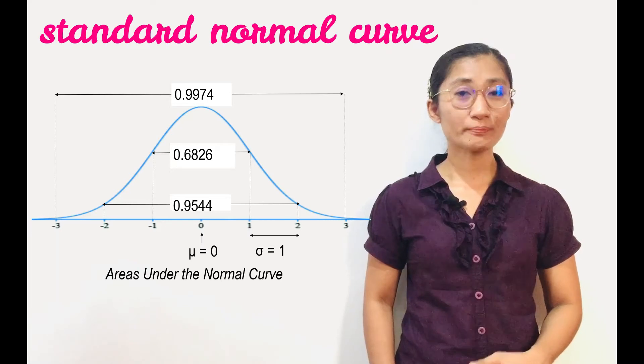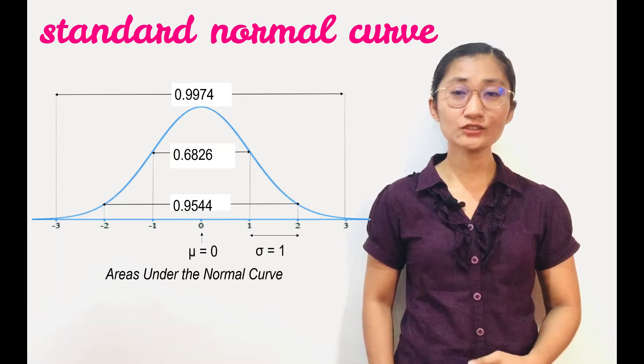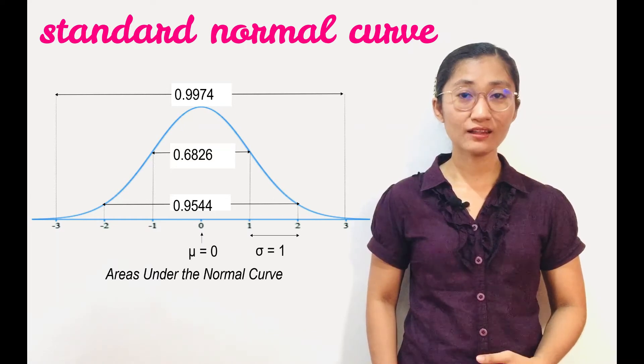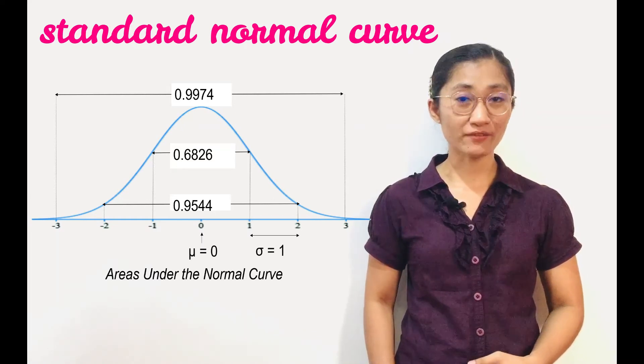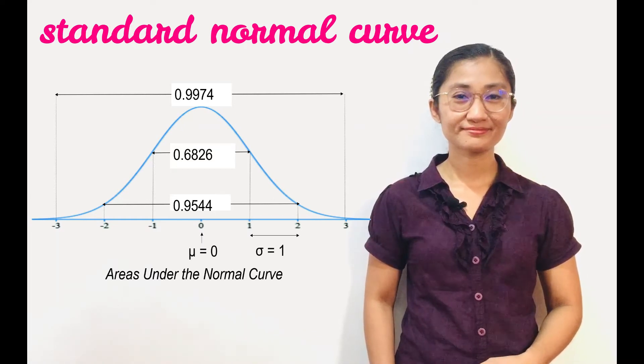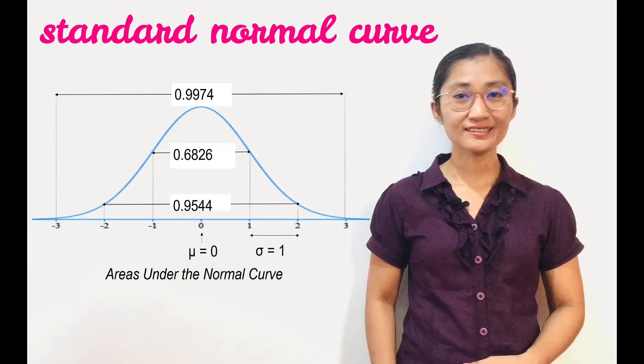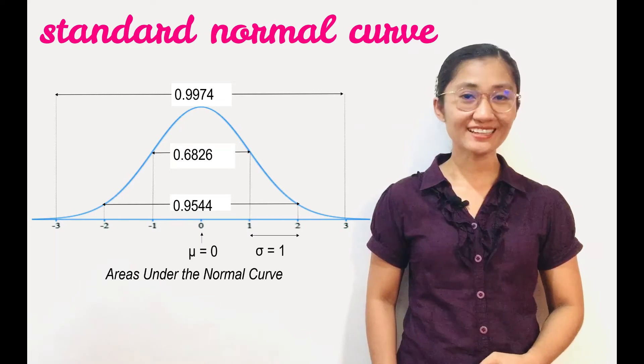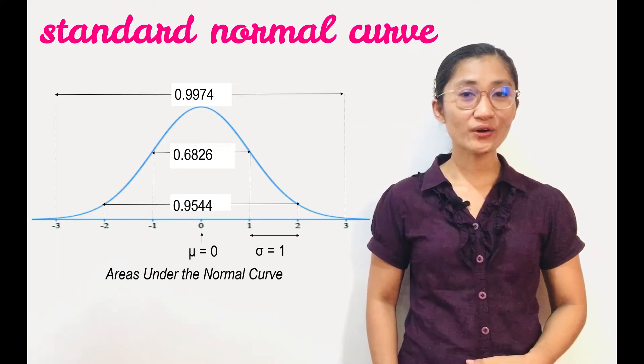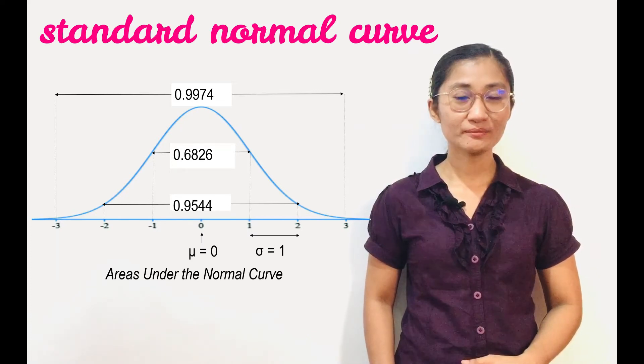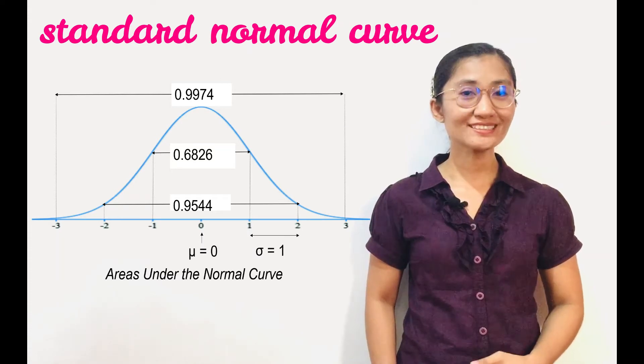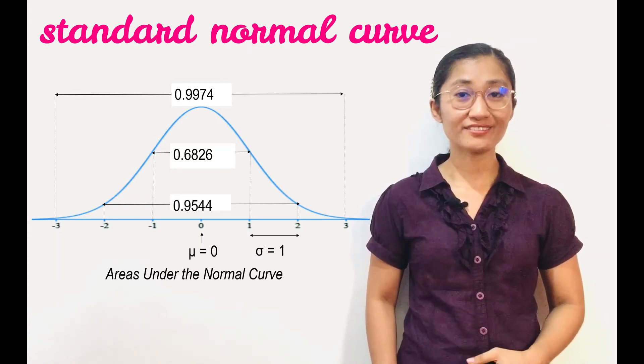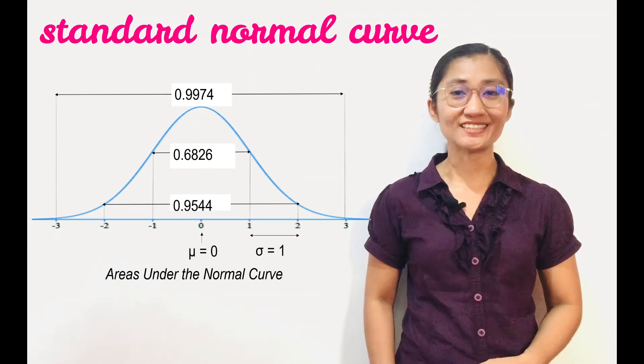The x-axis, or baseline, is divided into units with the standard deviation as the interval or distance between each pair of units. The figure beside me indicates that the area under the curve from negative 1 to 1, or from 1 standard deviation below the mean to 1 standard deviation above the mean, is 0.6826.